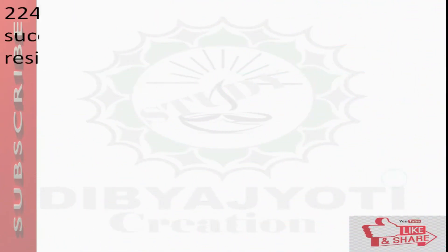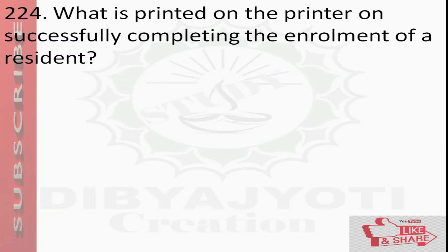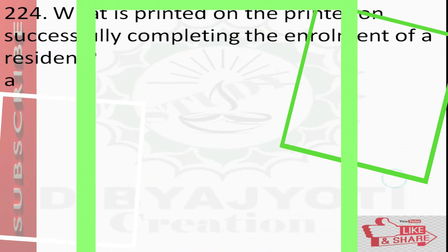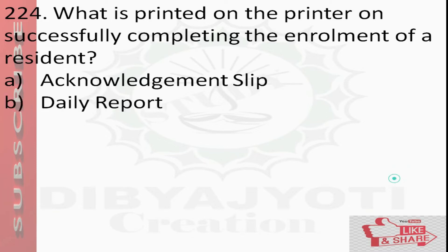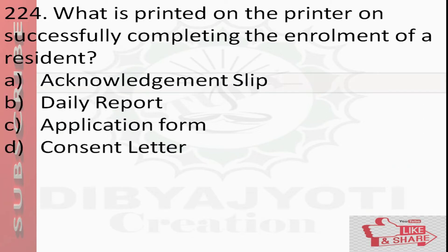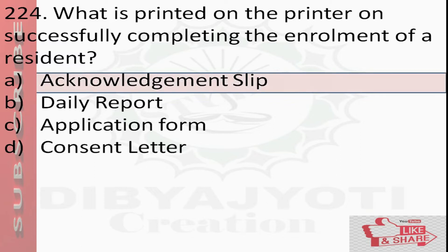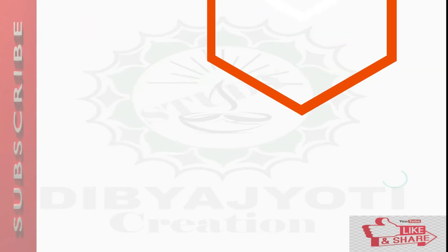Question number 224: What is printed on the printer on successfully completing the enrollment of a resident? Options are: option A acknowledgement slip, option B daily report, option C application form, option D consent letter. Answer is option A and option D, consent letter.